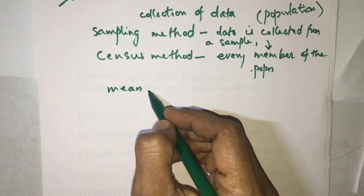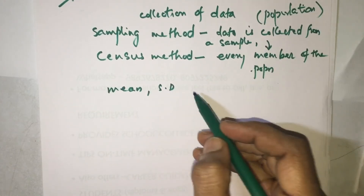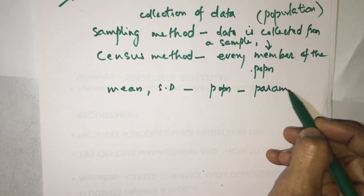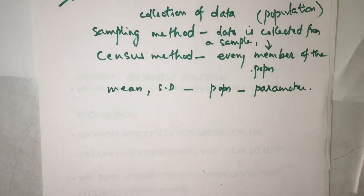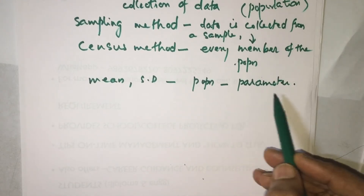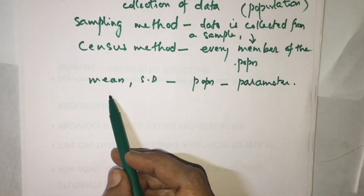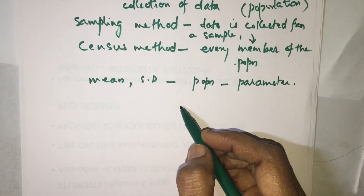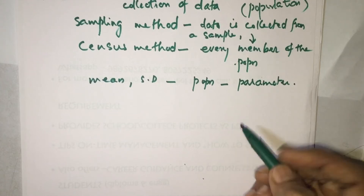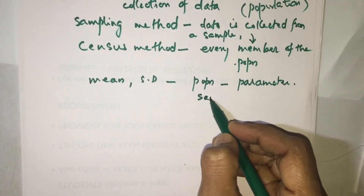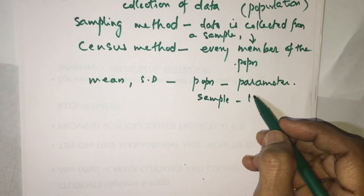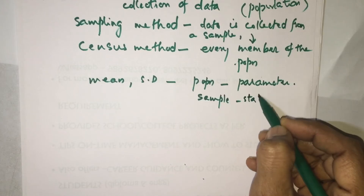A statistical measure such as mean, standard deviation, etc., calculated from a population, we call that a 'parameter.' Similarly, a statistical measure which is obtained from a sample, we call that a 'statistic.'